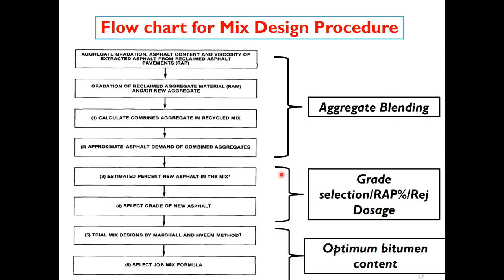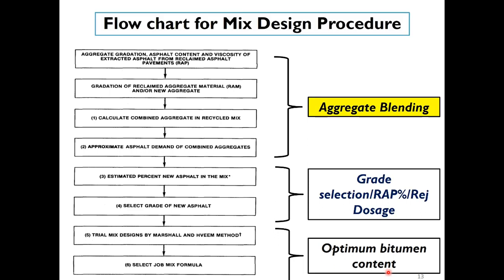In the second step, we find out what grade of binder to use, what percentage of RAP, and what dose of rejuvenator. Once you know the aggregate blending, the amount of bitumen to be added, and the type of bitumen, the remaining third step is very similar to the Marshall method mix design to determine optimum binder content and prepare the job mix formula. So let us first discuss aggregate blending.